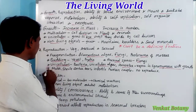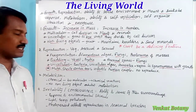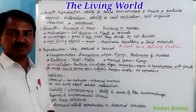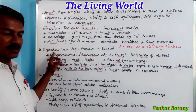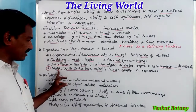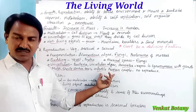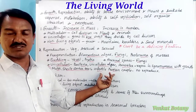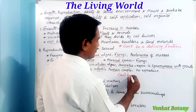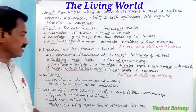However, mules, sterile worker bees, and infertile human couples are living organisms but have no reproduction capacity. We are living, but they have no reproduction capacity. Therefore, reproduction cannot be a defining property to distinguish living from non-living.